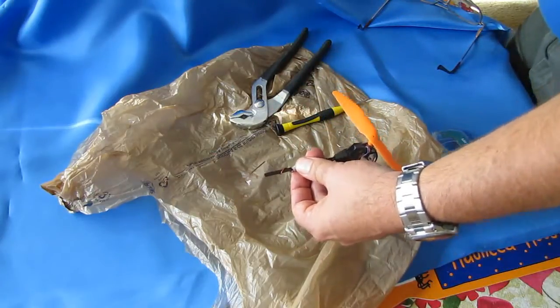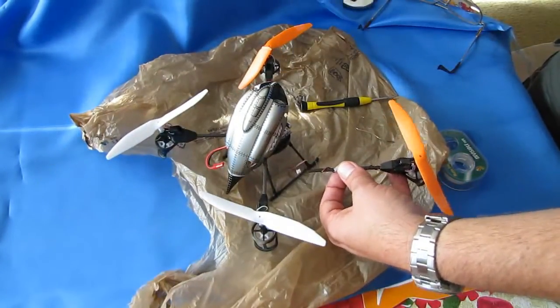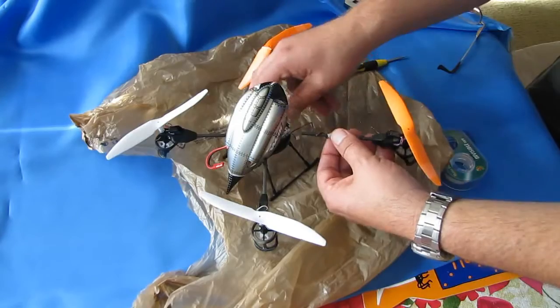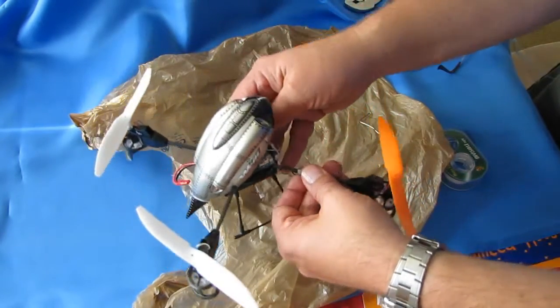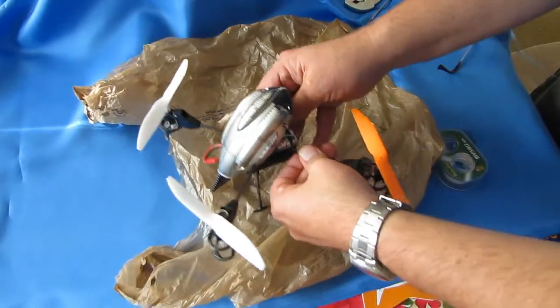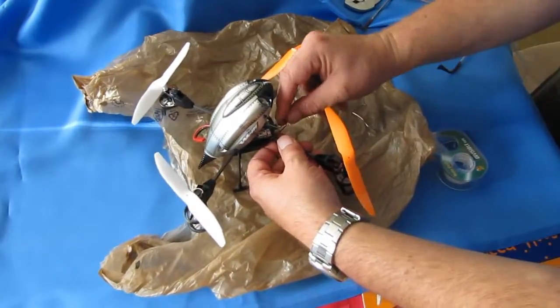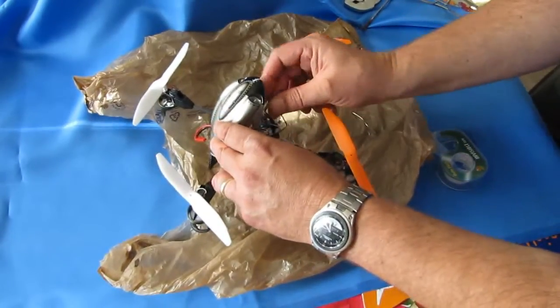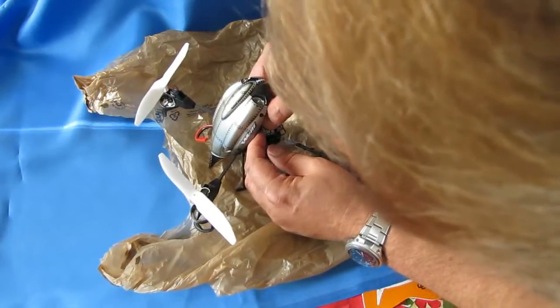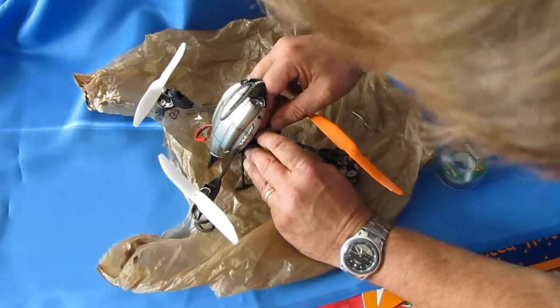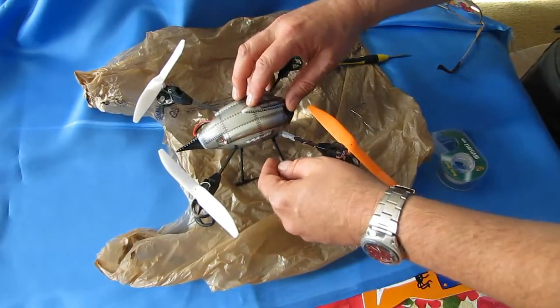All I need to do is take the quadcopter, move these parts out of the way, insert this end of the mast into the quadcopter, until it's snug. And then simply take the plug and reinsert it into the circuit board. And I should be good to go.